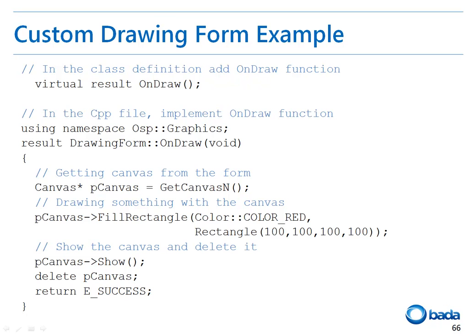As you can see in this example, the onDraw function has been overridden in the form class header file. Looking at the definition of the onDraw function: first, we need to acquire the canvas. Since each control has its own canvas, we can easily acquire a canvas by calling the getCanvasN function. After that, we can draw various objects using the canvas. For example, this source code draws a colored rectangle using the fillRectangle function. When the drawing is complete, the source code calls the show function of the canvas to show the contents of the canvas on the screen. Then the created canvas is deleted and success is returned.